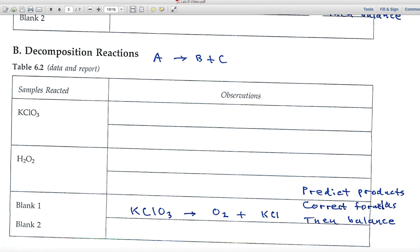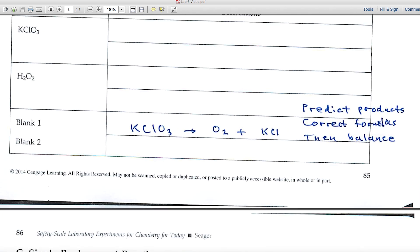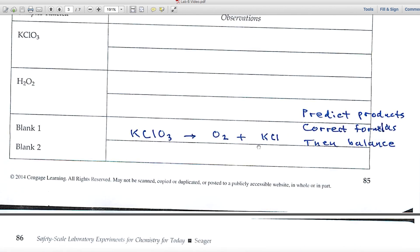In Part B, decomposition reactions follow the form A → B + C — one starting material giving two products. We'll look at the decomposition of KClO₃ and H₂O₂. I'll help you with one of these blanks and leave the other for you.